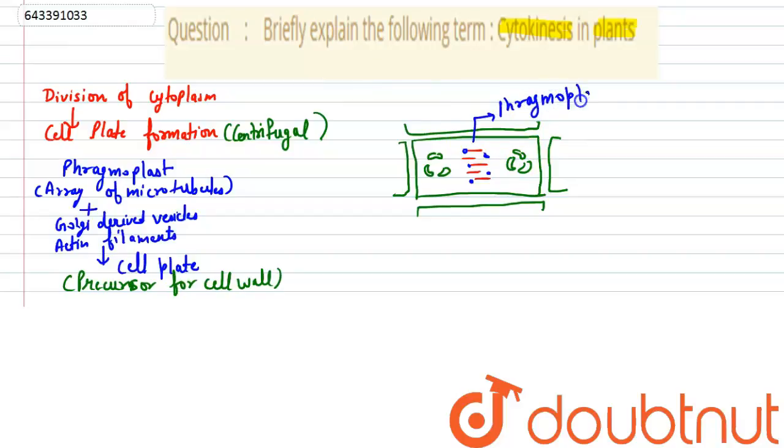so these are, they will help in the formation of, they will generate the cell plate. So these are phragmoplast, phragmoplast, phragmoplast, that will ultimately form